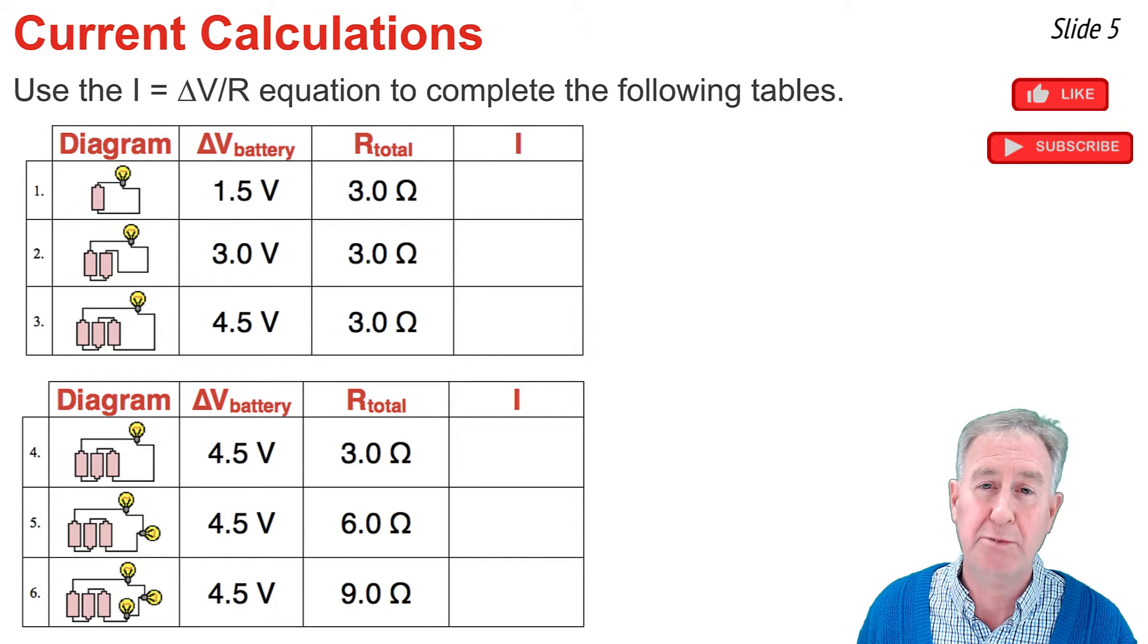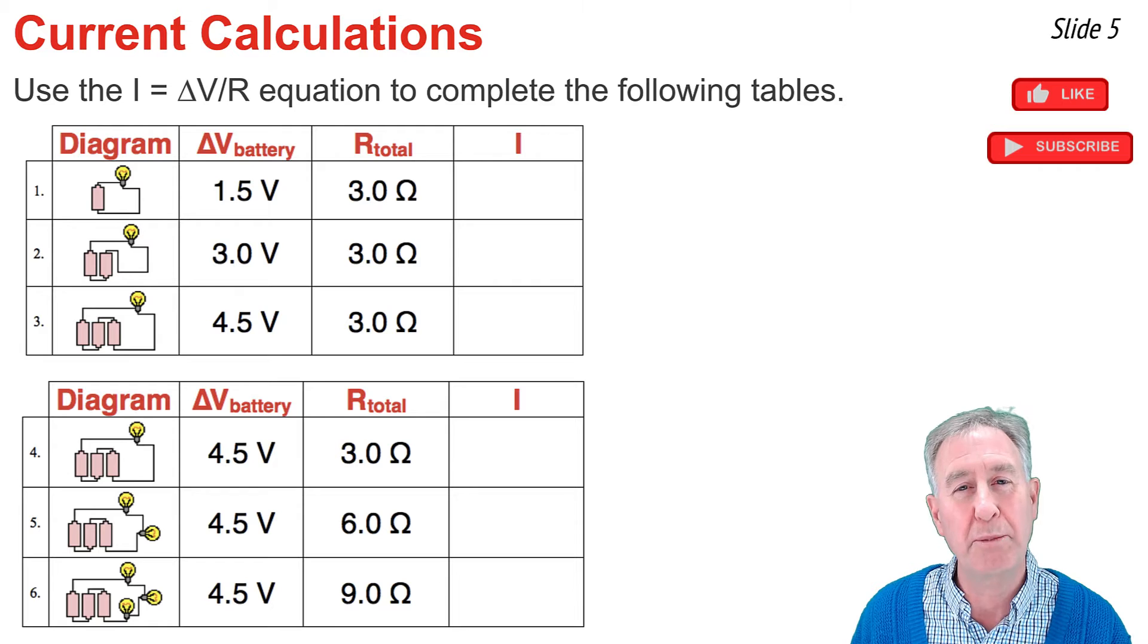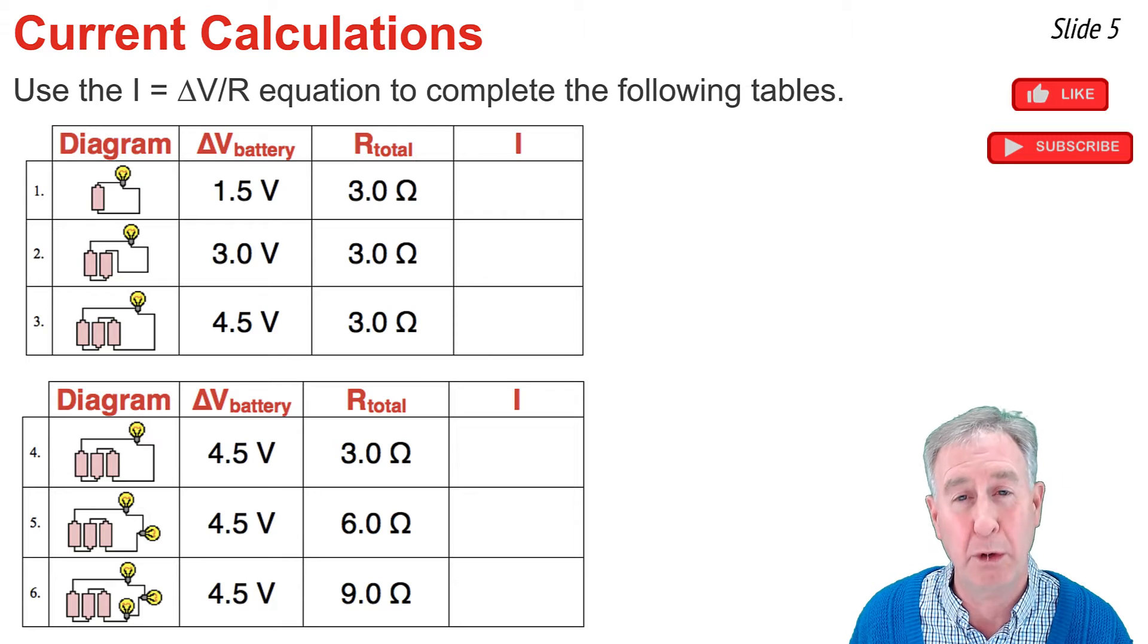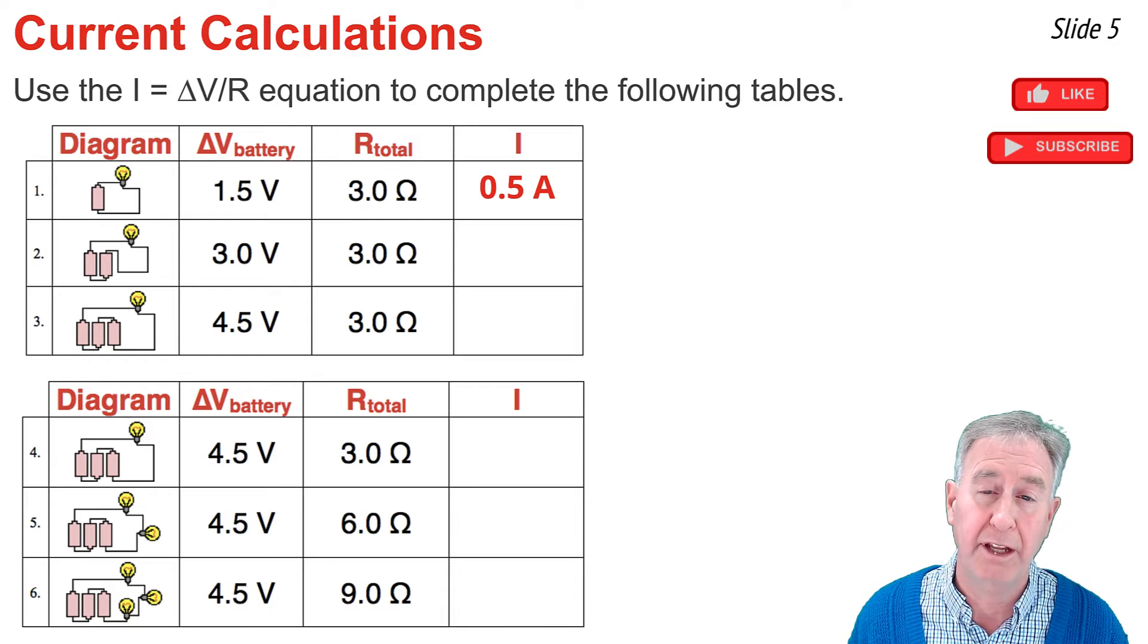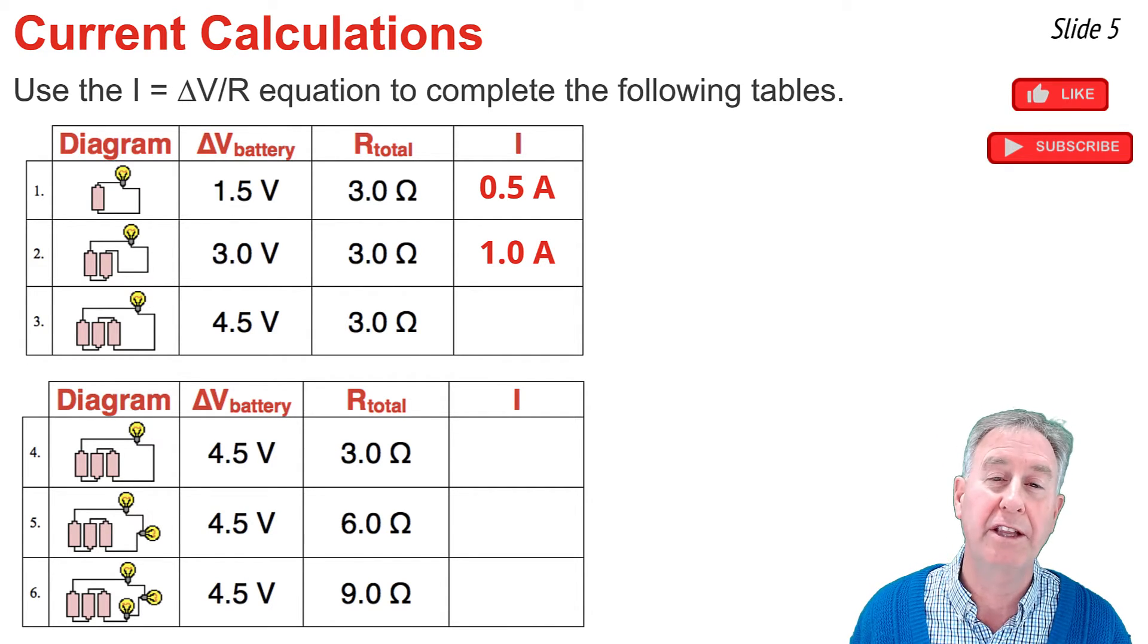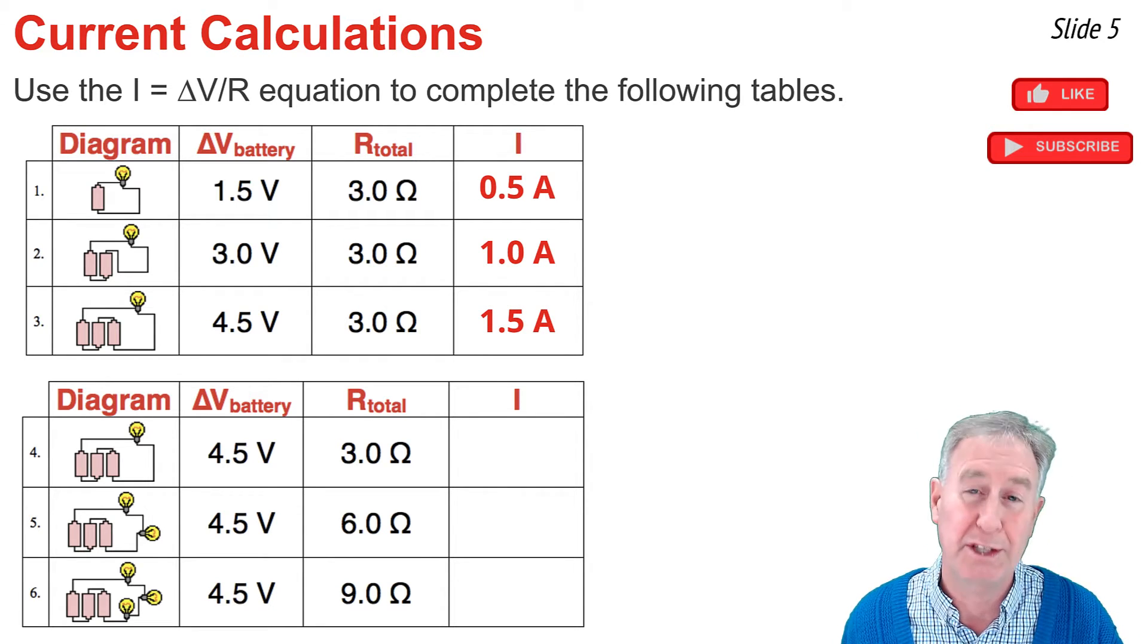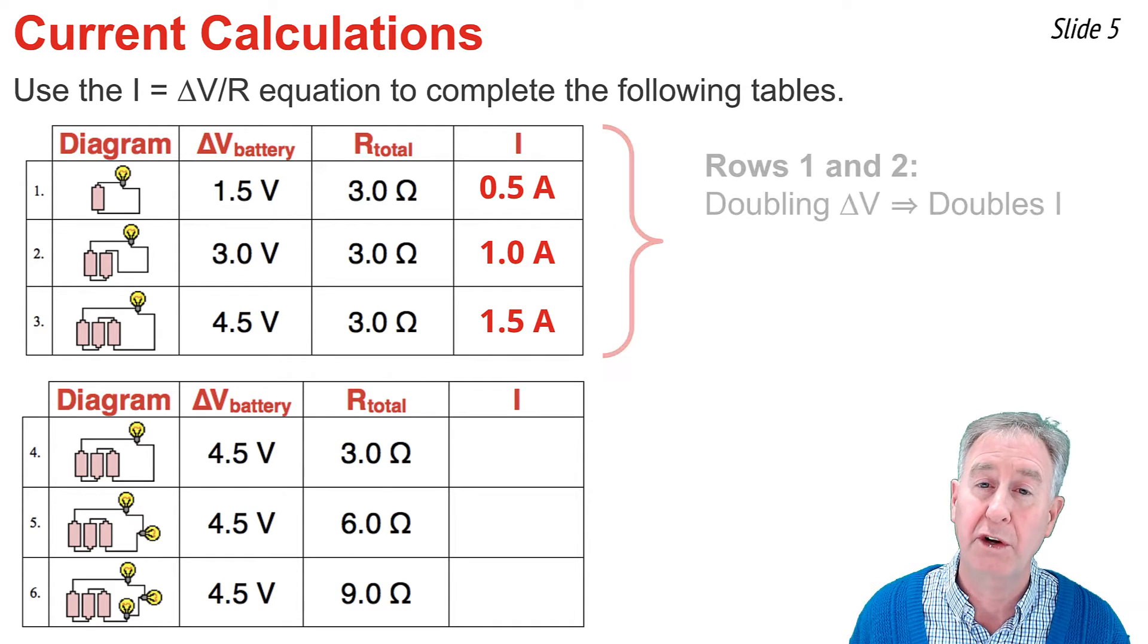But what is changing is delta V because going from row 1 to 3, I notice in the diagram that one cell is being added in each row. So delta V is increasing from 1.5 volts to 4.5 volts. Now let's do our calculations. In the first row, to calculate I, I'm going to go 1.5 volts divided by 3. In the second row, 3 volts divided by 3 ohms. And in the last row, 4.5 volts divided by 3 ohms. But I want you to pick up on a pattern that is occurring here.